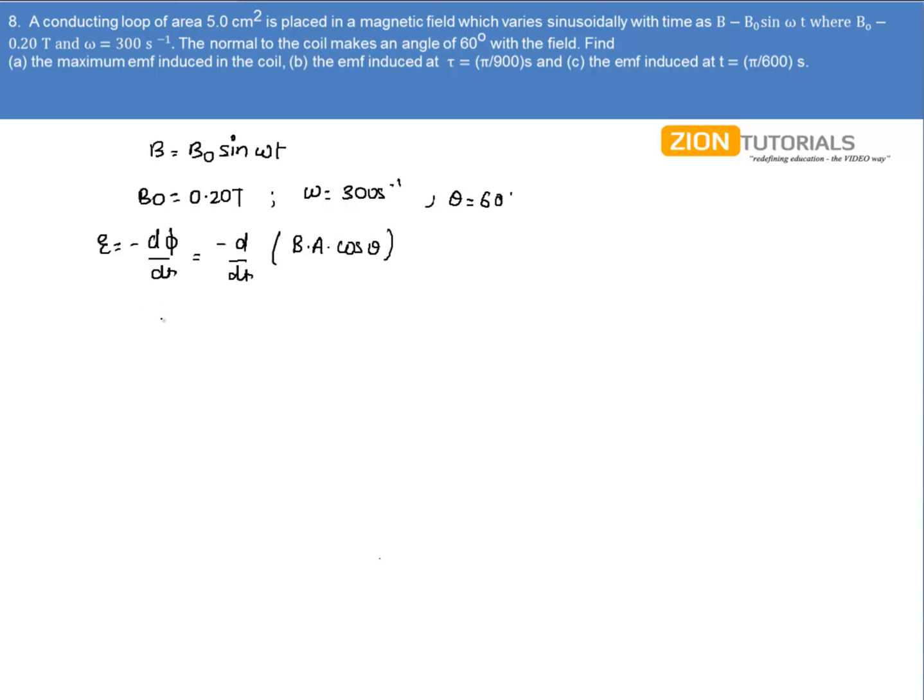On substituting the value we get minus d by dt of B₀ sin ωt into area. Area is given as 5 × 10⁻⁴ meter square into cos of 60 degrees.